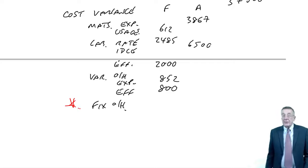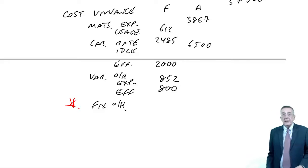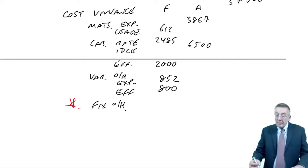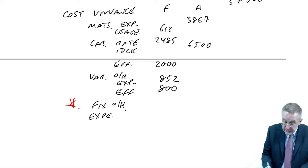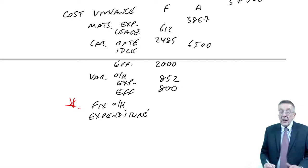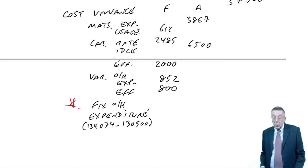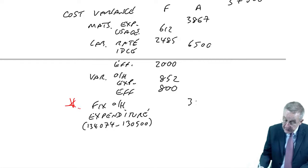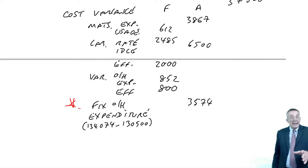The only one that changes is fixed overheads. And why is it going to change? The reason we had the problem in the first place with fixed overheads was when we were doing absorption, we'd been charging at 15 a unit. With marginal, that isn't a problem. Obviously what is a problem is if we spend more or less, we have an expenditure variance. Just as before for the same reasons, it's the difference between the actual expenditure and the budget expenditure. So exactly as before, we overspent by 3574. However, because we've not been absorbing the overheads, there's no volume variance.